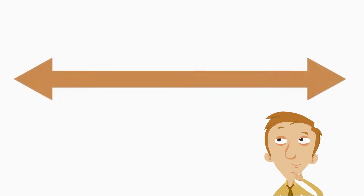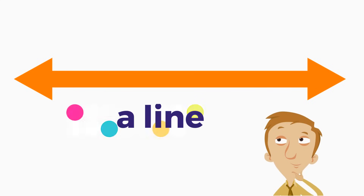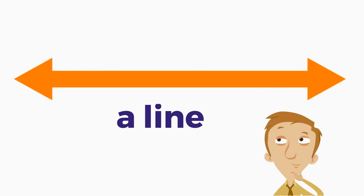Here is our last one. What do you see here? What is this? You've got it — a line. Sweet. How do we know it's a line? It has two arrows. That's right, it has two arrows. This is a line.